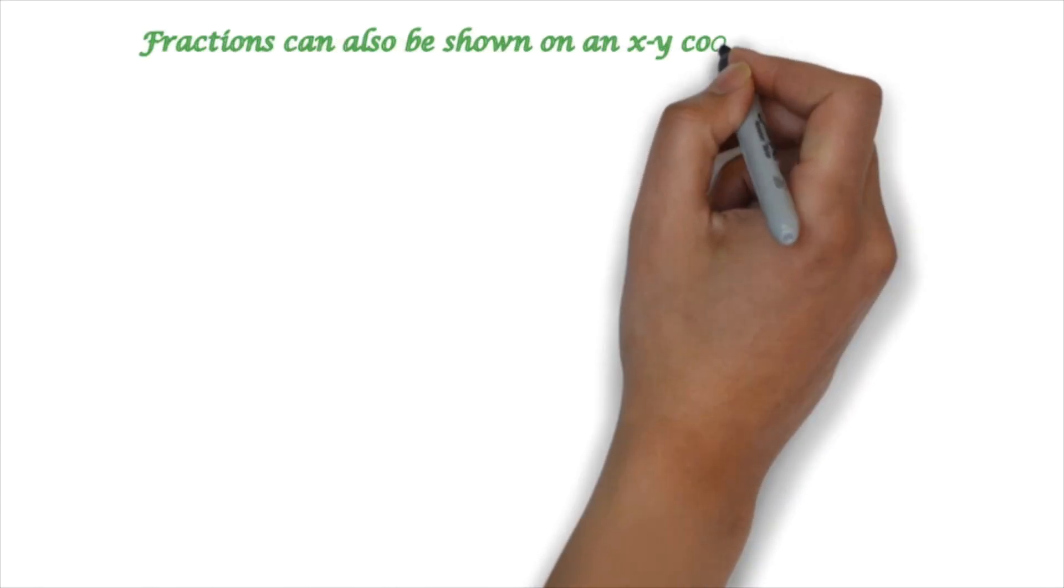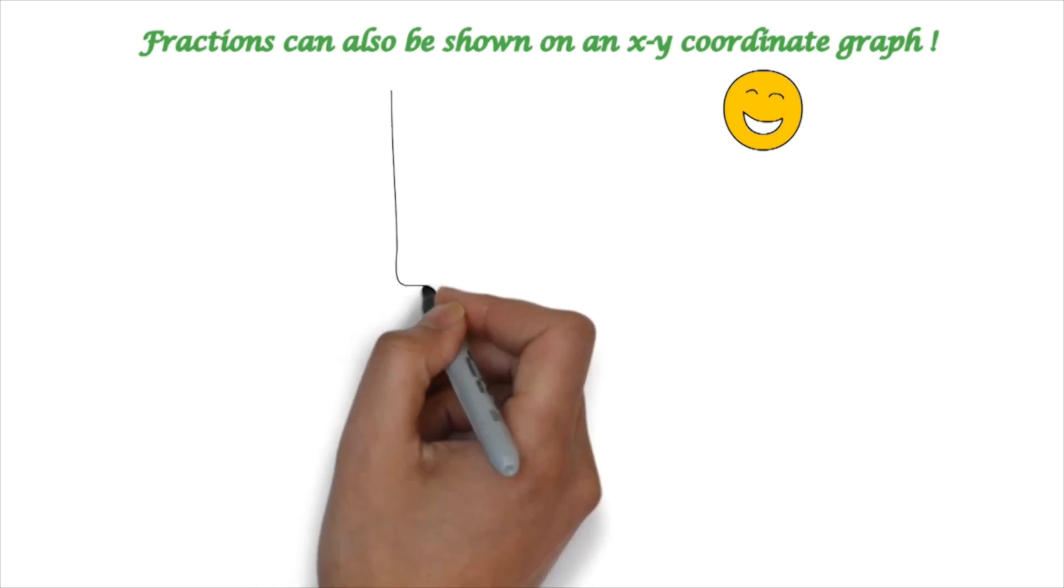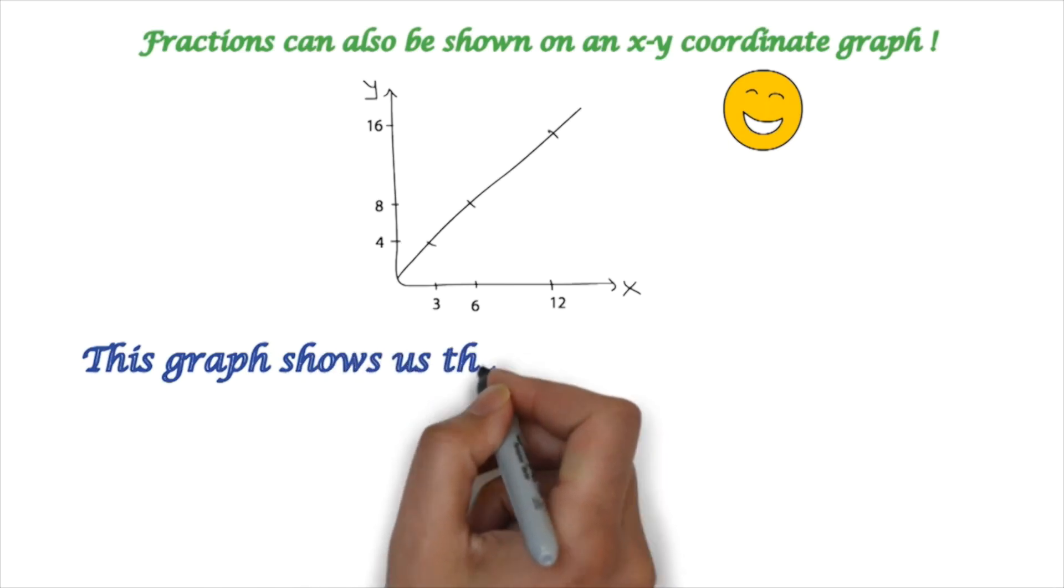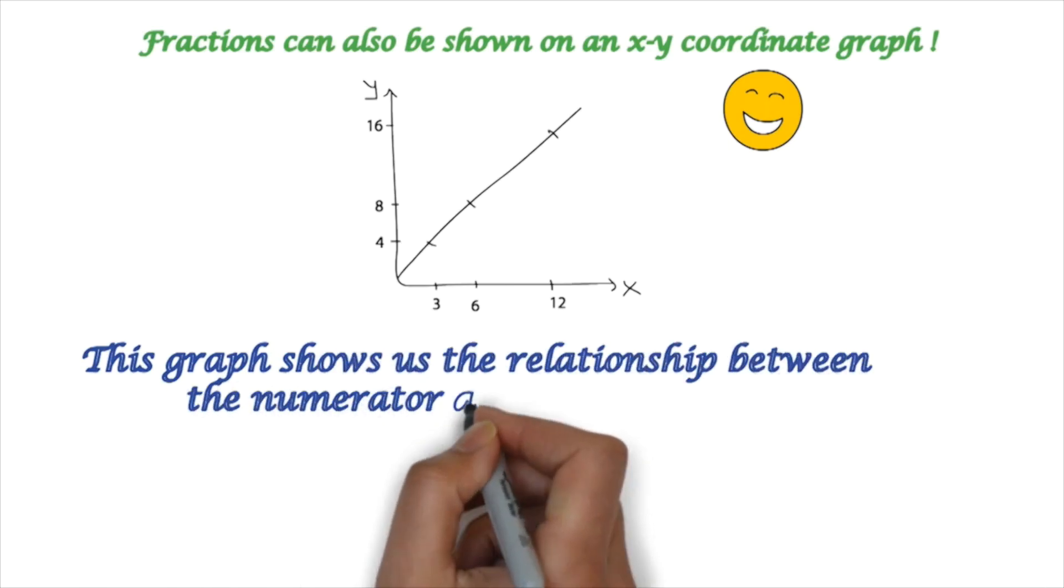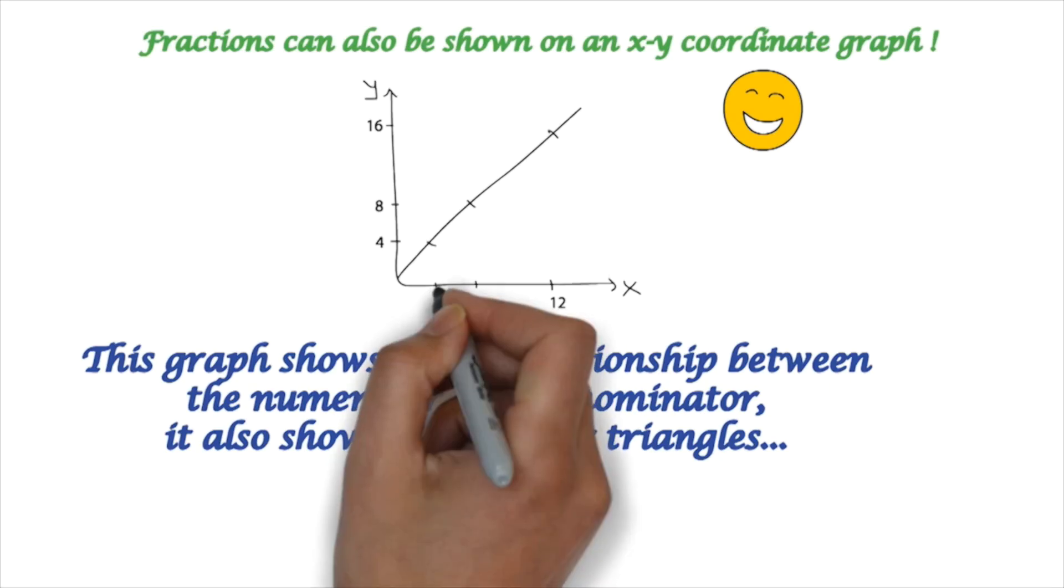Fractions can also be shown on an XY coordinate graph. This graph shows us the relationship between the numerator and denominator. It also shows us three similar triangles, as you can see.